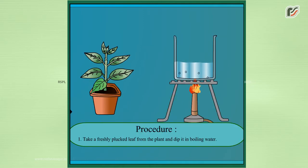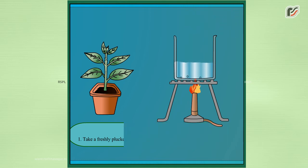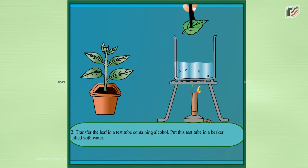Procedure. Take a freshly plucked leaf from the plant and dip it in boiling water. Transfer the leaf in a test tube containing alcohol.